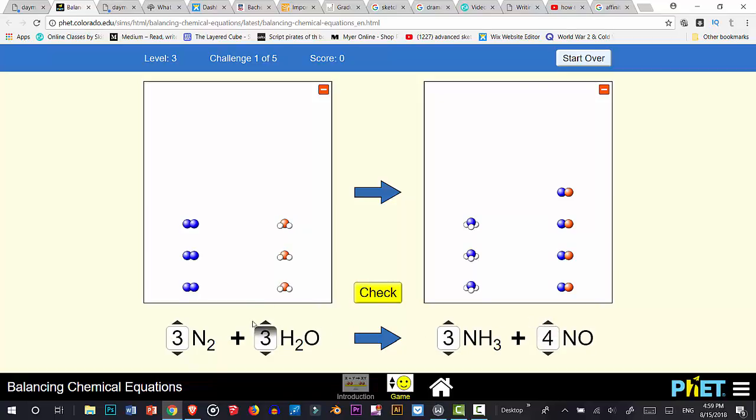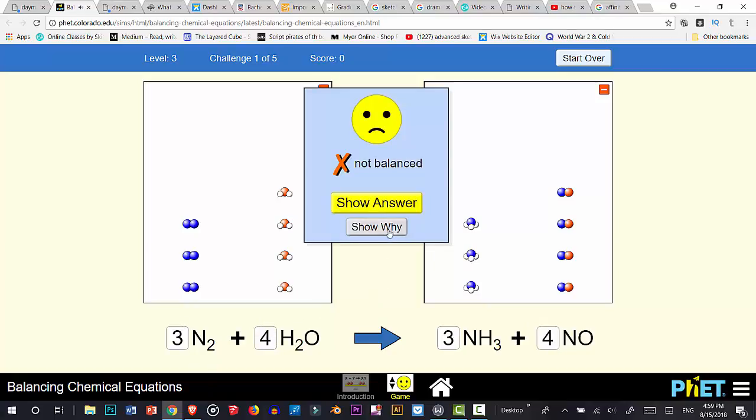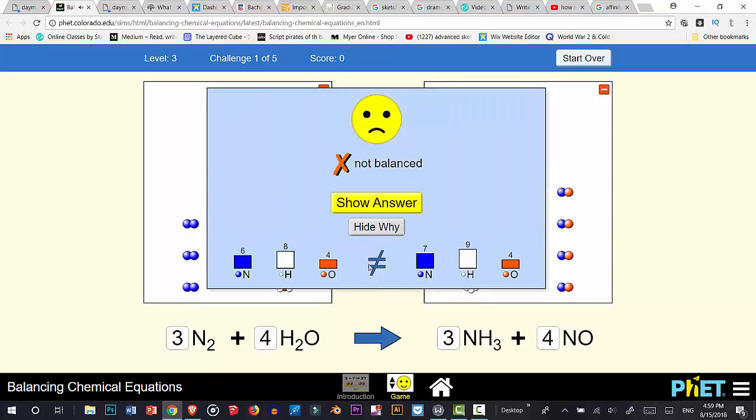So after making your decisions and adding what you wanted, you go to the check button to check if you got the answer wrong. It can show the answer, why you didn't get it right, and the amount of units for each part of it.